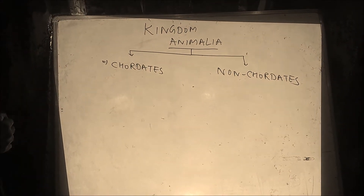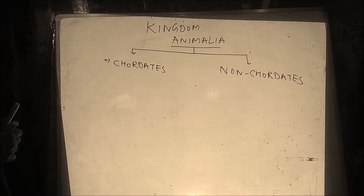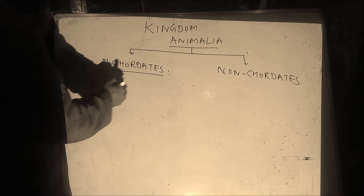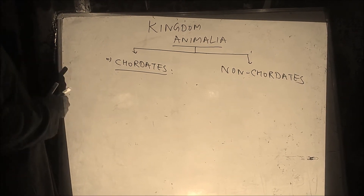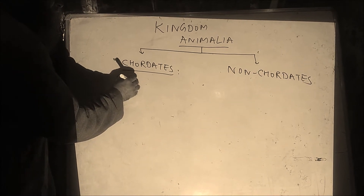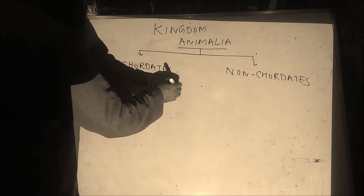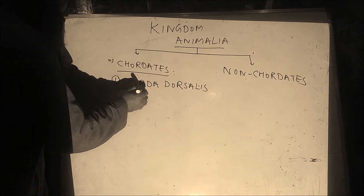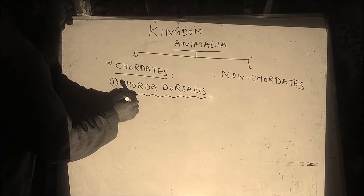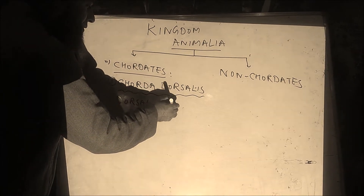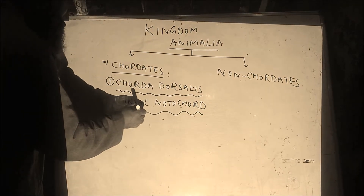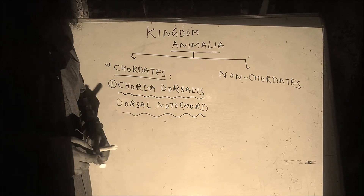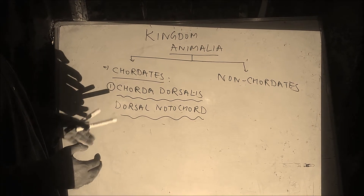These two groups of creatures — Chordates and Non-Chordates — both of them are animals, and they can be well differentiated on the basis of their special diagnostic characters. One of the important diagnostic characters that makes the major difference between the two is the presence of a Notochord, also called Chorda dorsalis. This is the main difference that makes the two groups distinct.